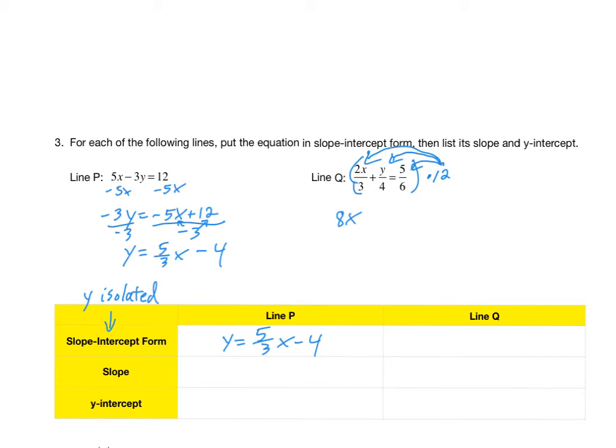12 times the Y over 4, the 4 divides into the 12, giving us 3. 3 times the Y that's left is 3Y. When 12 multiplies into the 5 over 6, the 6 divides into the 12, giving us 2. And then 2 times the 5 that's left there is 10.